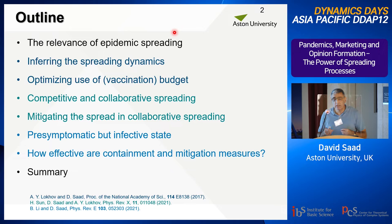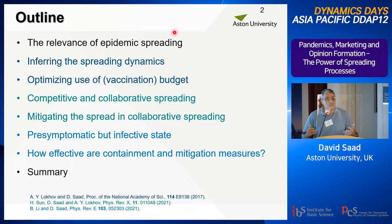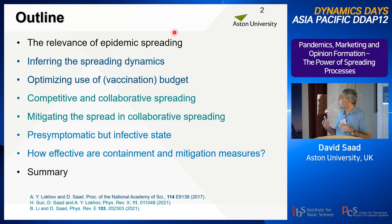Then I'll move on to competitive and collaborative spreading. In competitive spreading, there are two different spreading processes in parallel, and they are mutually exclusive. In collaborative ones, one can assist the other. The first can correspond to opinion setting — Republicans versus Democrats — two parallel processes of convincing people. And the collaborative process can be HIV and tuberculosis, where the spread of one disease is assisted by the other.